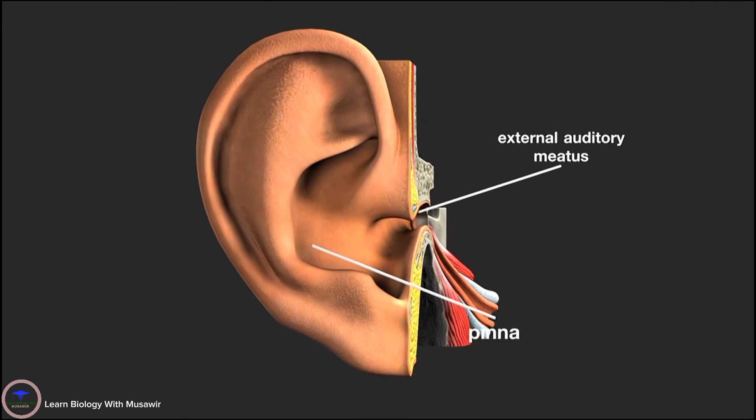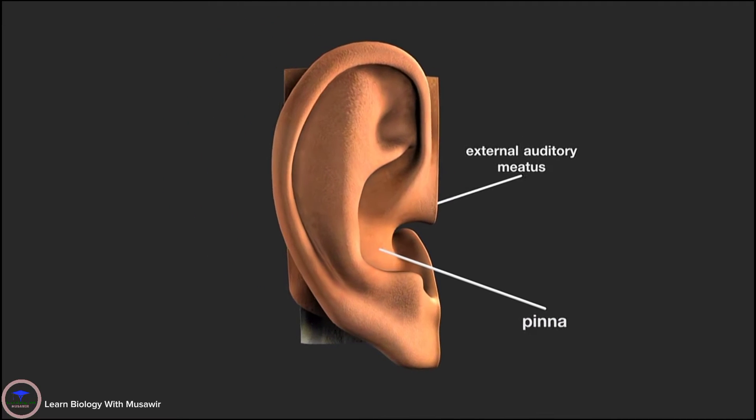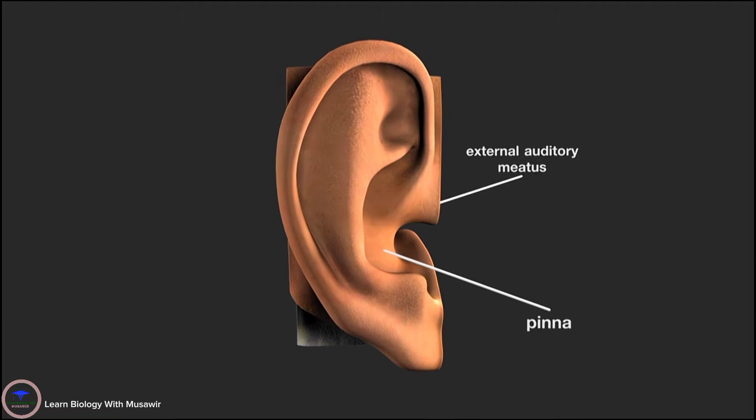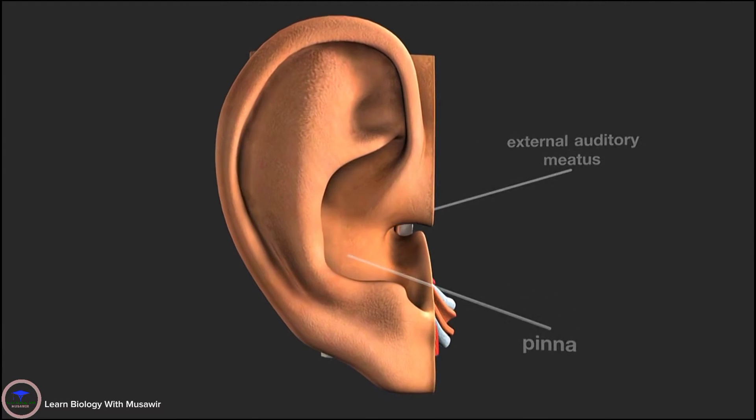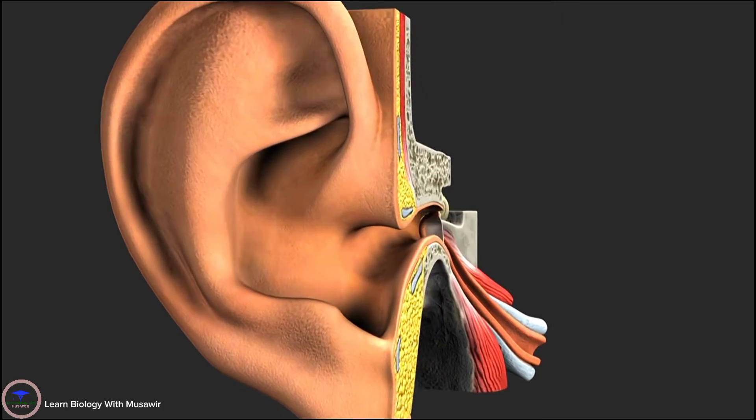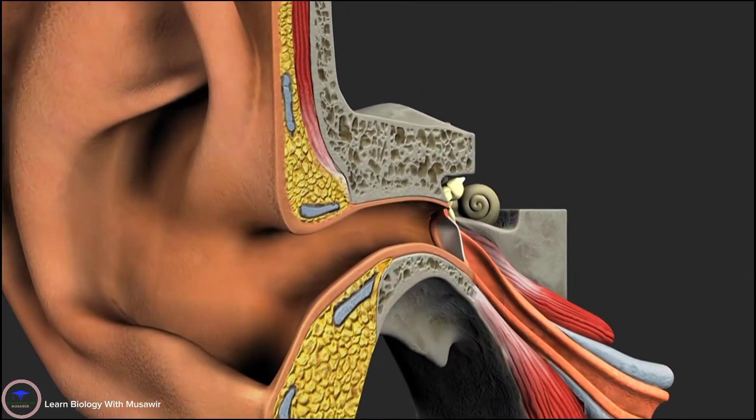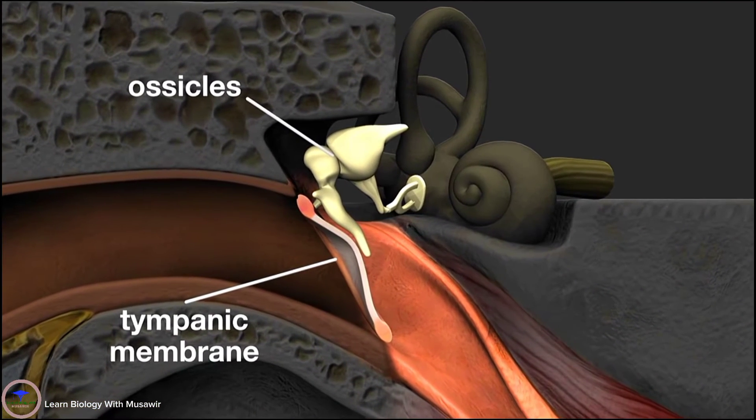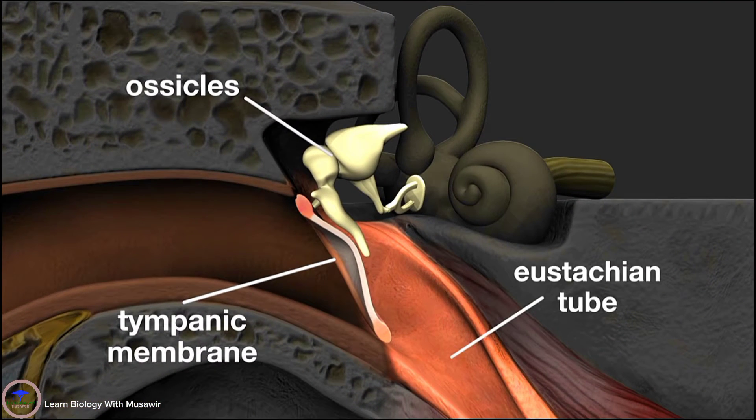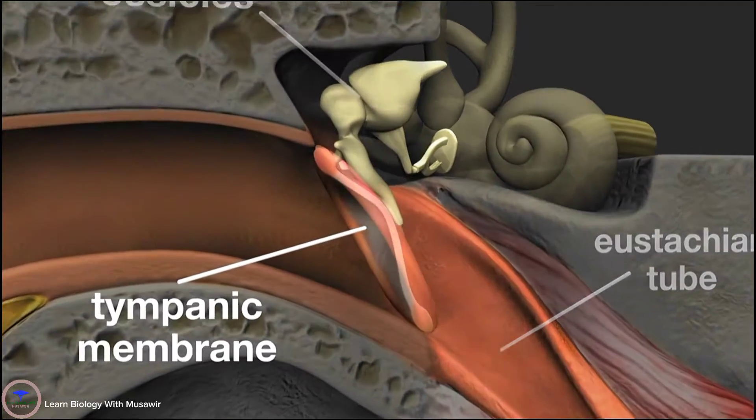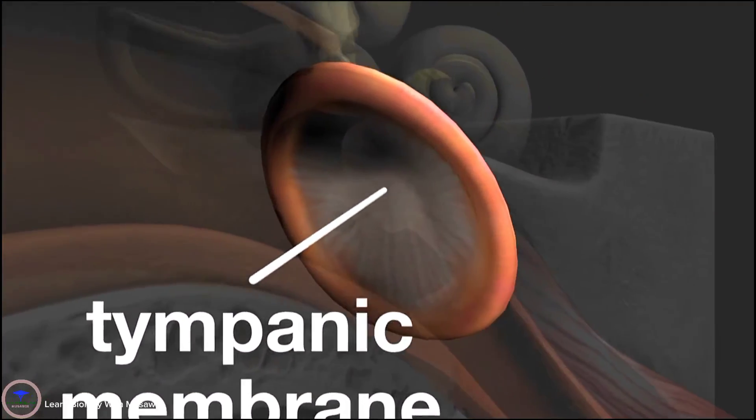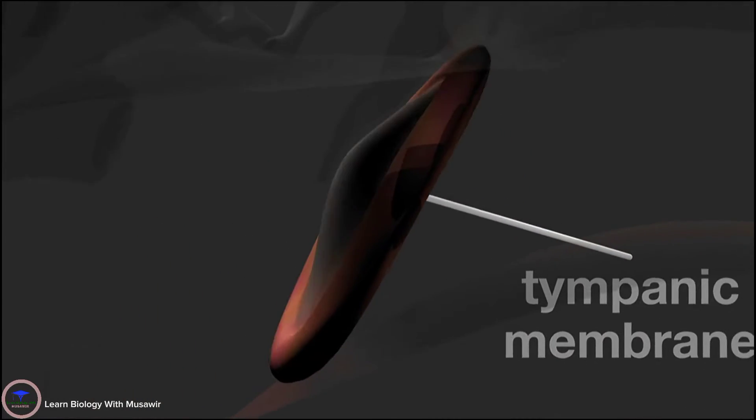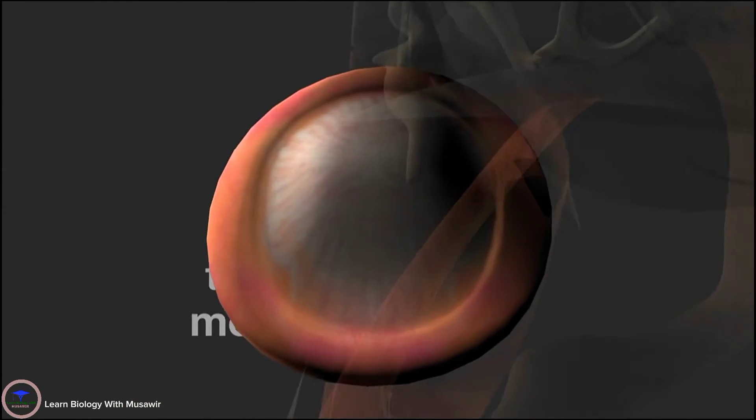The middle ear is an air-filled cavity located in the temporal area of the skull. It consists of the eardrum, the tympanic membrane, the ossicles, and the Eustachian tube. The tympanic membrane is concave with an area of between 60 and 90 millimeters and an average thickness of just seven hundredths of a millimeter, and it has a very rich blood supply.